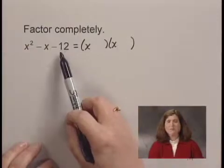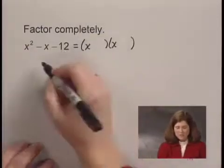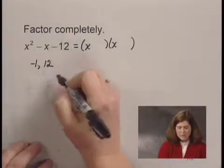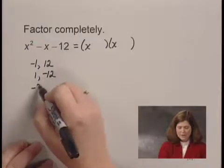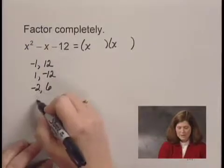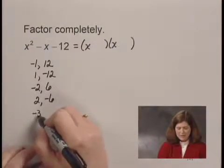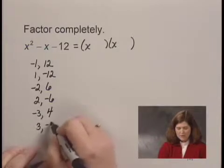we think of possible factors of negative 12. The factors of negative 12 are negative 1 and 12, 1 and negative 12, negative 2 and 6, 2 and negative 6, negative 3 and 4, and 3 and negative 4.